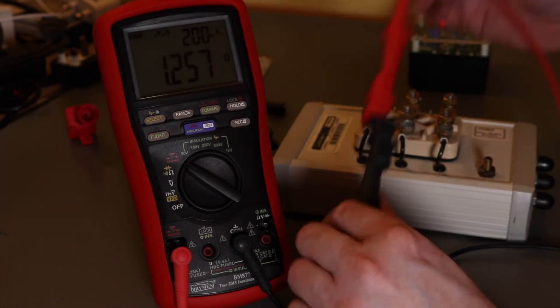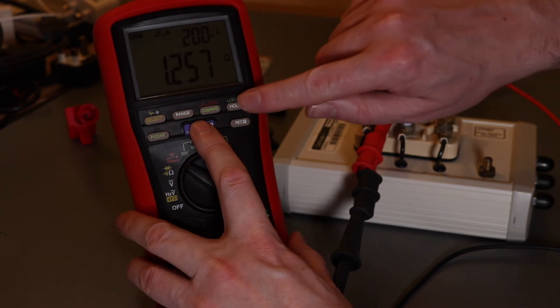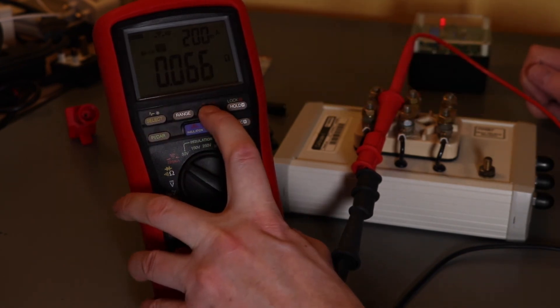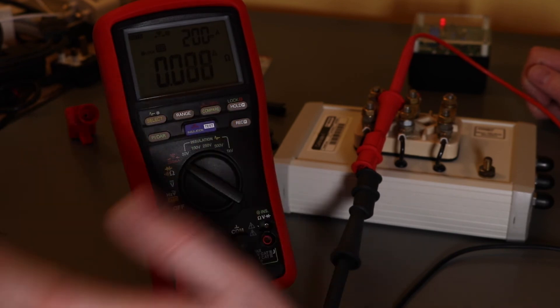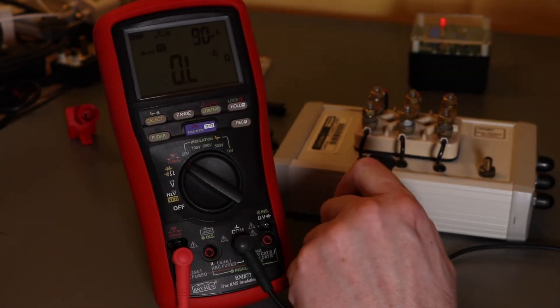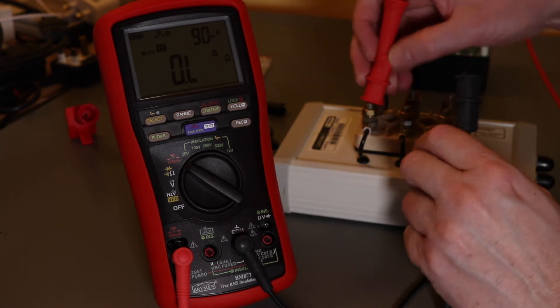So to use the zero function, short the leads out together, you put it on and hold it. So it stays on, and then hold in the delta, and it's zeroed itself there. And then you go back and redo your measurements.